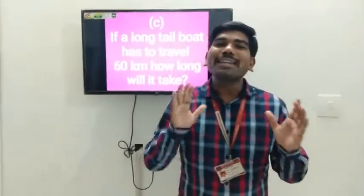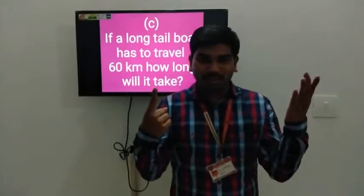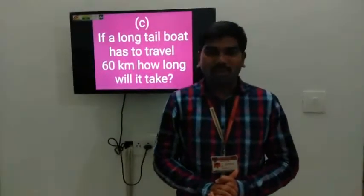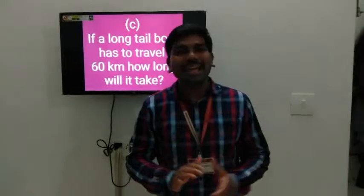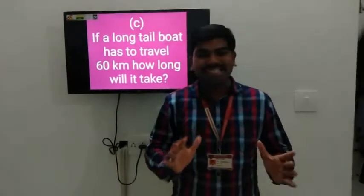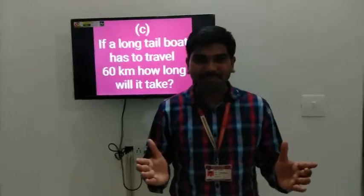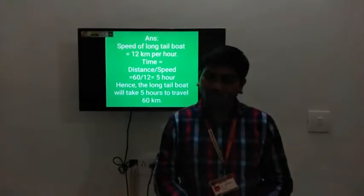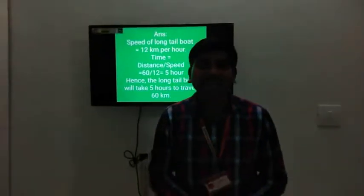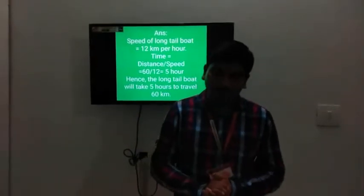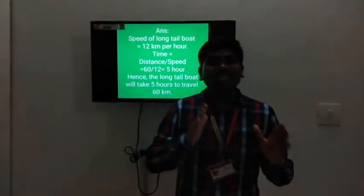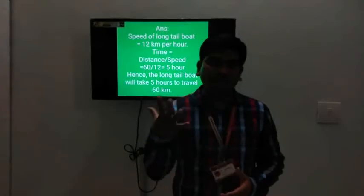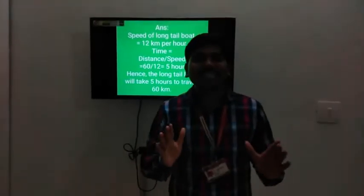Next question. A long tail boat has to travel 60 km. How long will it take? The speed of this long tail boat is 12 km per hour. So to find time, we will divide distance by speed. Distance is 60 km and speed is 12 km, so 60 divided by 12, the answer will be 5 hours. So to travel the distance of 60 km, a long tail boat will take 5 hours.